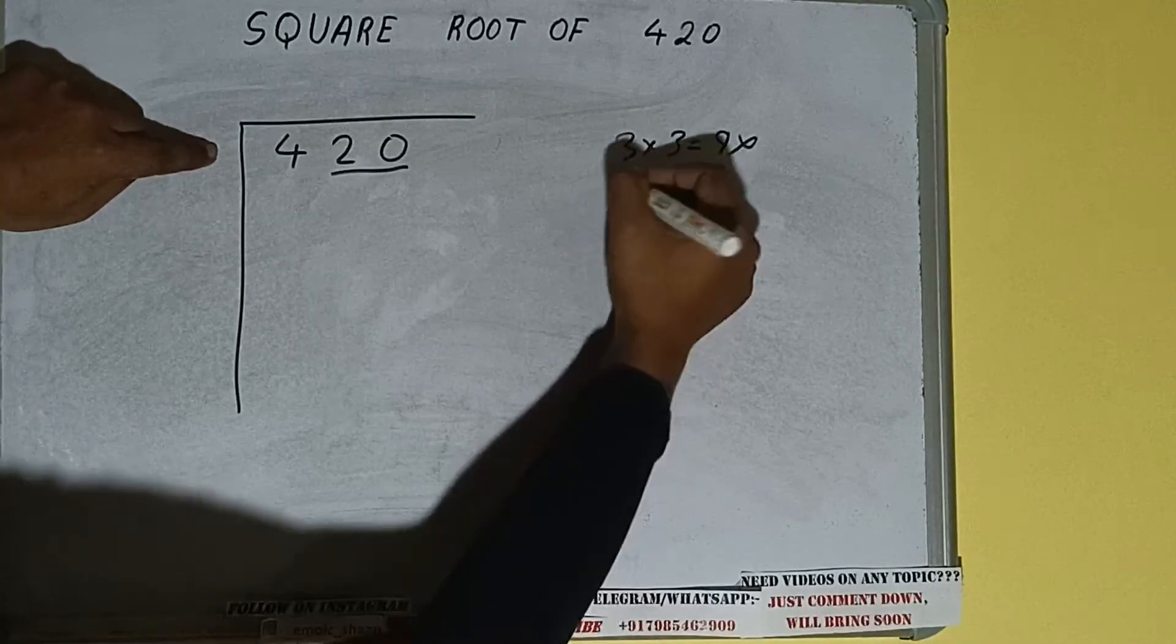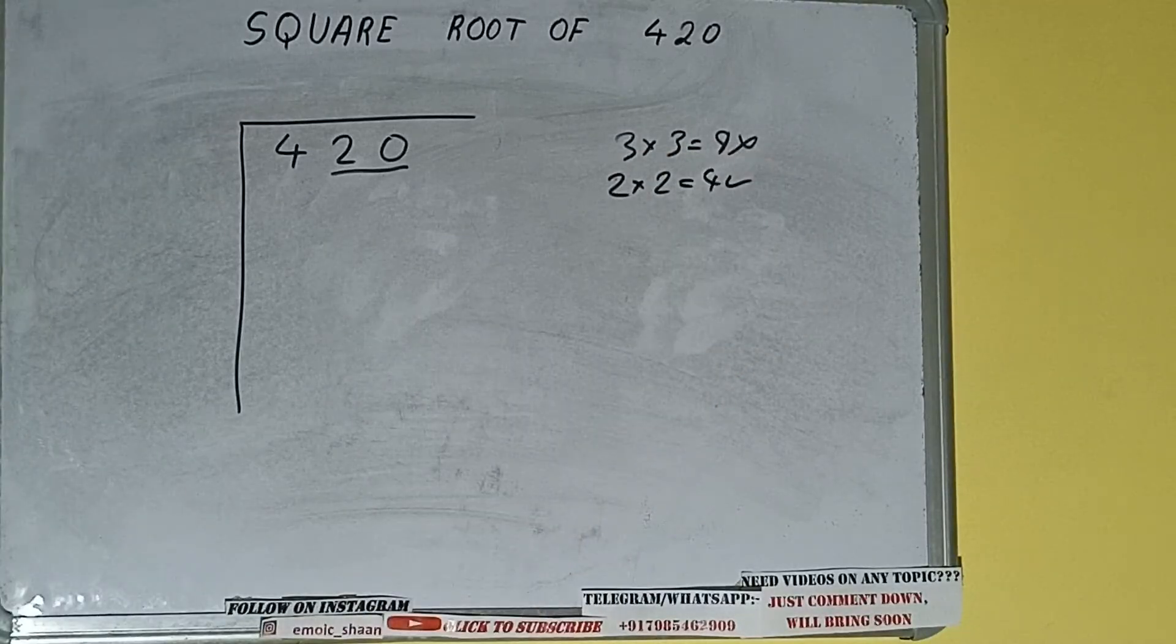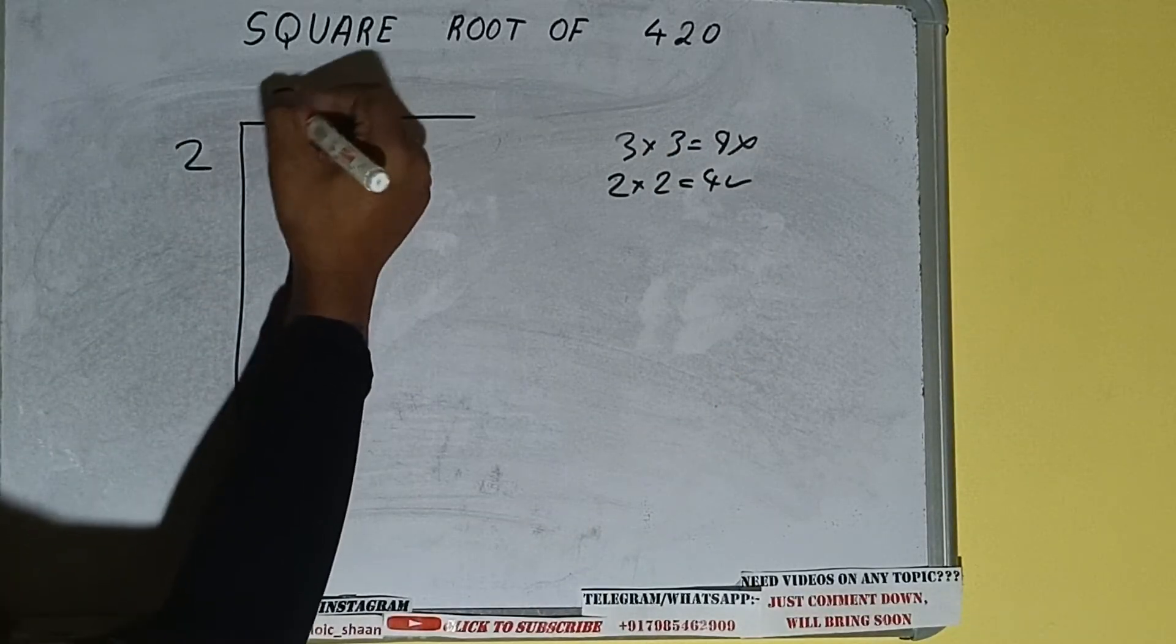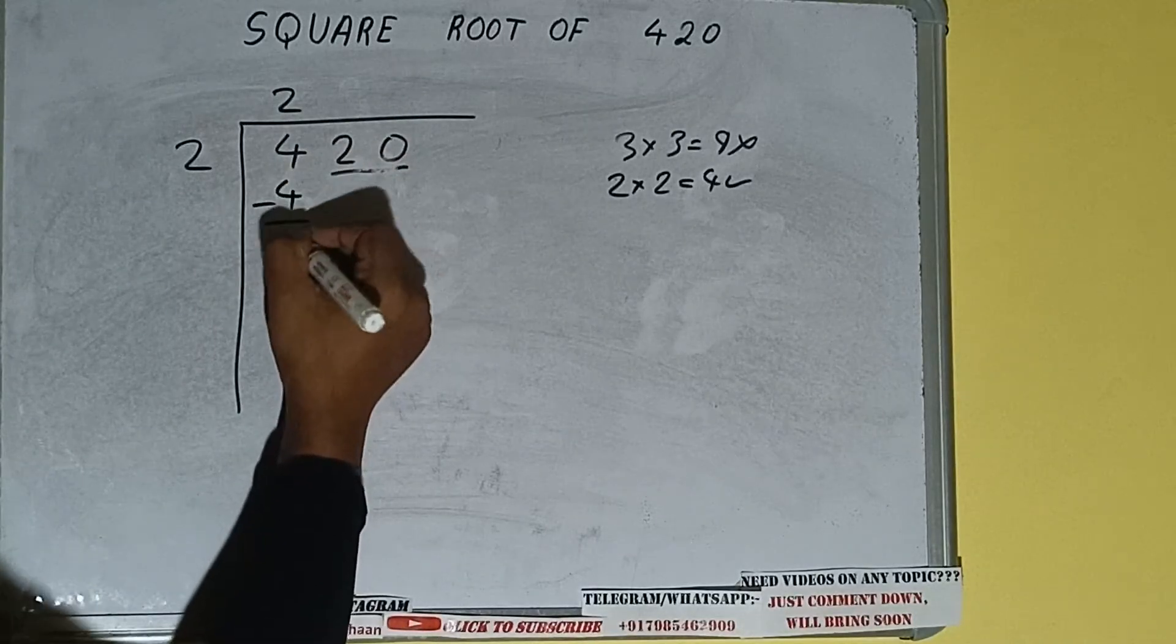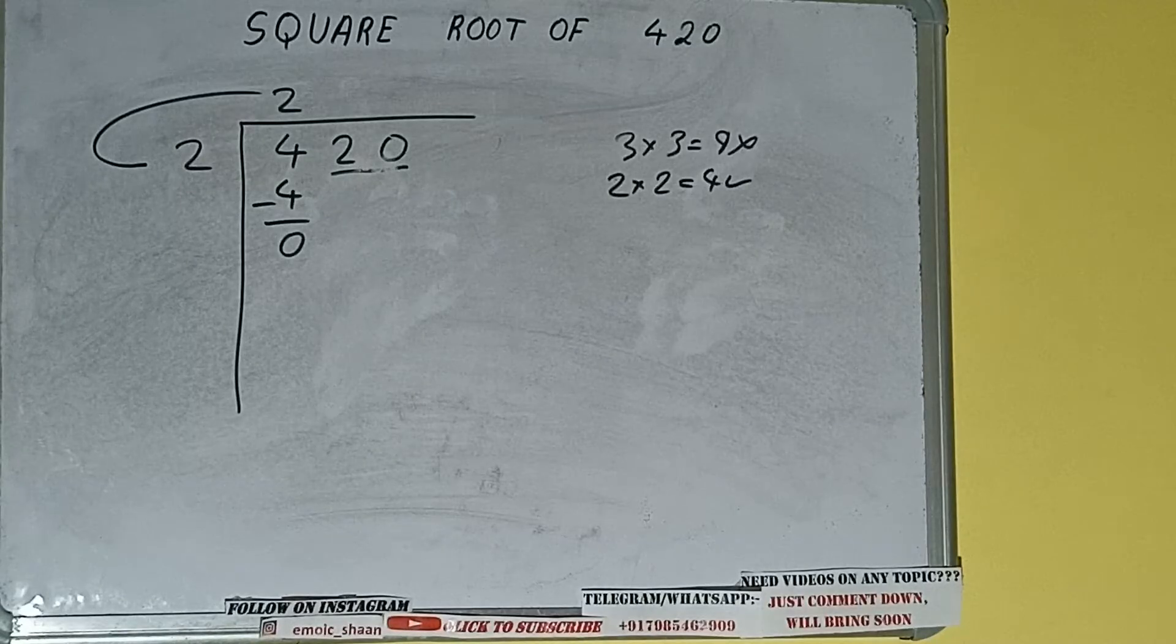If we write 2 here and 2 here, it will be 4, which is good to take. So 2 here and 2 here. 4 minus 4, 0 will be left. We did 2 into 2, so add both. 2 plus 2 will be 4.